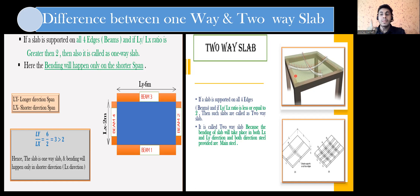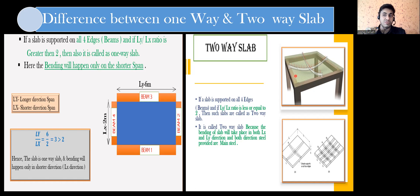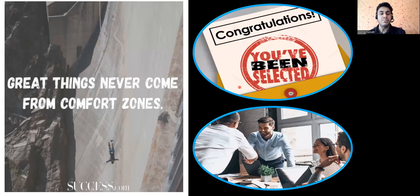To summarize reinforcement: in a one-way slab, main reinforcement is in the shorter span; in a two-way slab, main reinforcement is in both shorter and longer spans. For distribution steel: in a one-way slab, distribution steel is provided along the longer span. In a two-way slab, there is no separate distribution steel because the main reinforcement in both directions itself acts as distribution reinforcement. Answer only what is asked — don't invite further trouble by over-explaining. We've covered one-way slab, two-way slab, and reinforcement placement. See you in the next lecture.